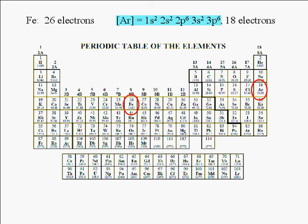The argon core 1s² 2s² 2p⁶ 3s² 3p⁶ accounts for 18 electrons. 26 minus 18 is 8. We have 8 more electrons to assign. 2 of the 8 electrons go into the 4s subshell. And the last 6 go into the 3d subshell.